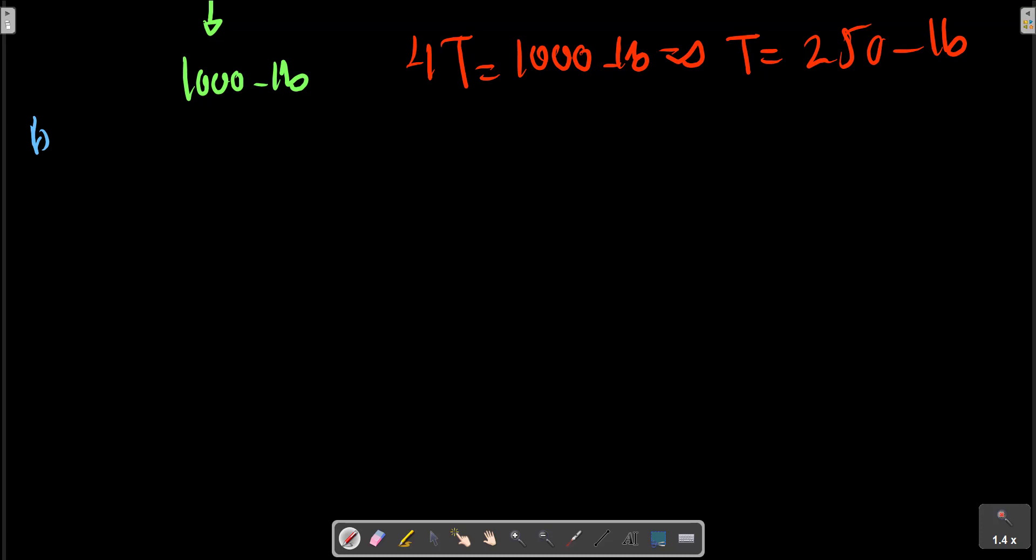Part B: for the forces at pulley C, we have force T here, force T here, and Cy. The angle is 30 degrees. In this case we can make a relation for equilibrium.